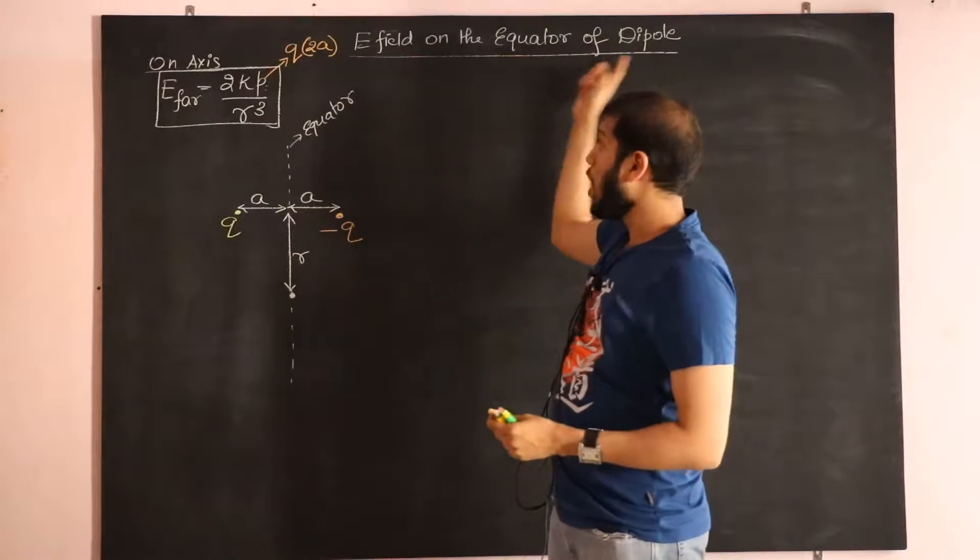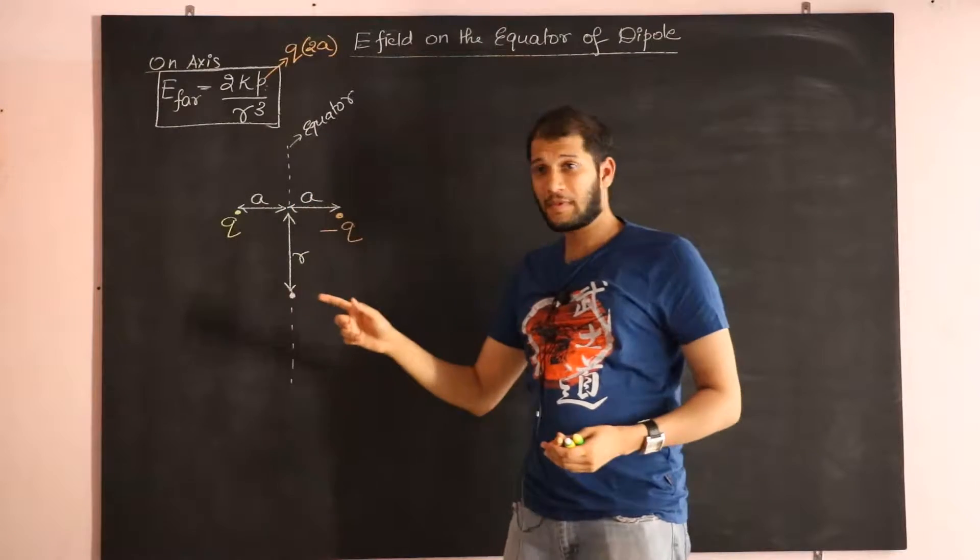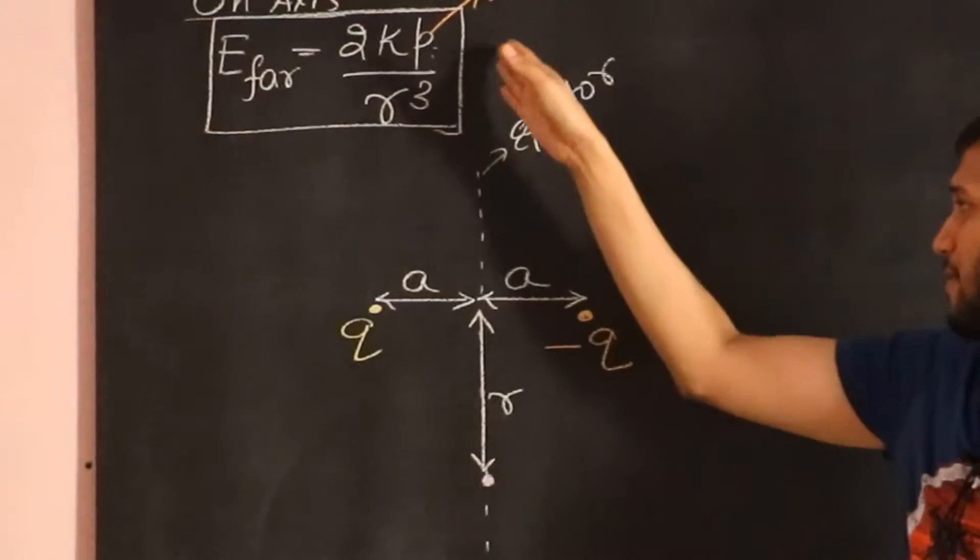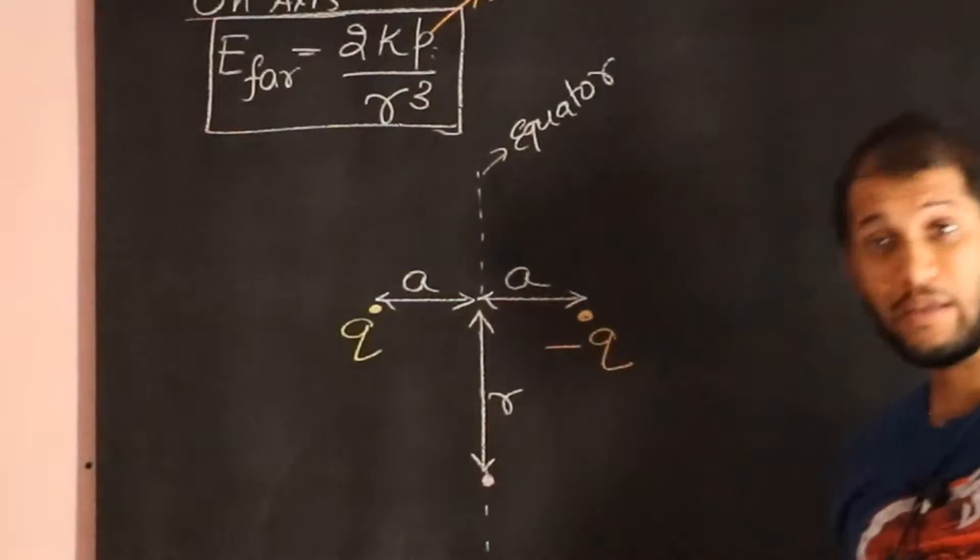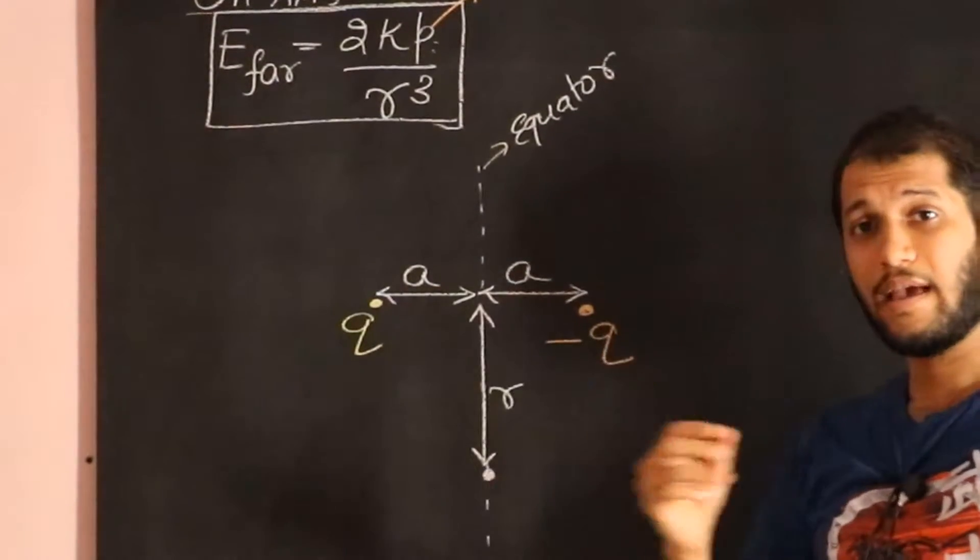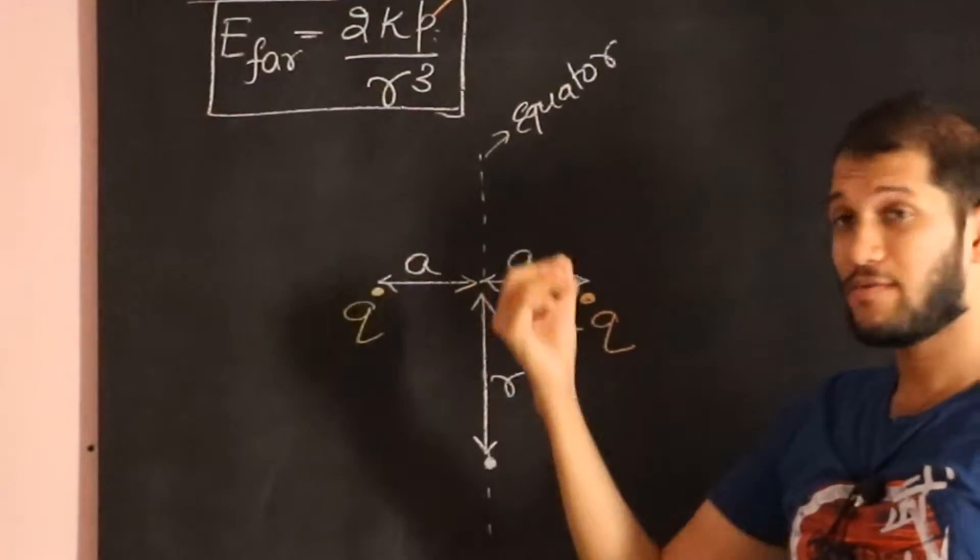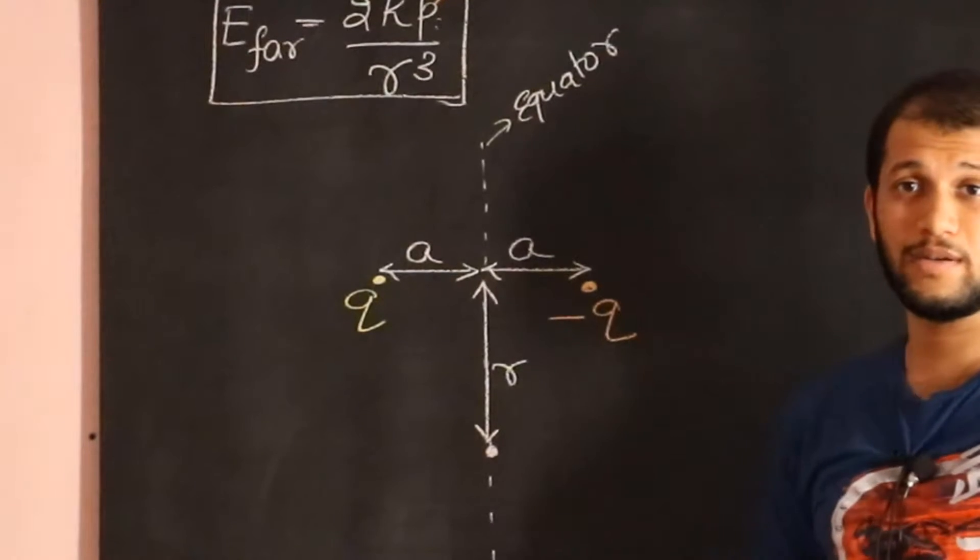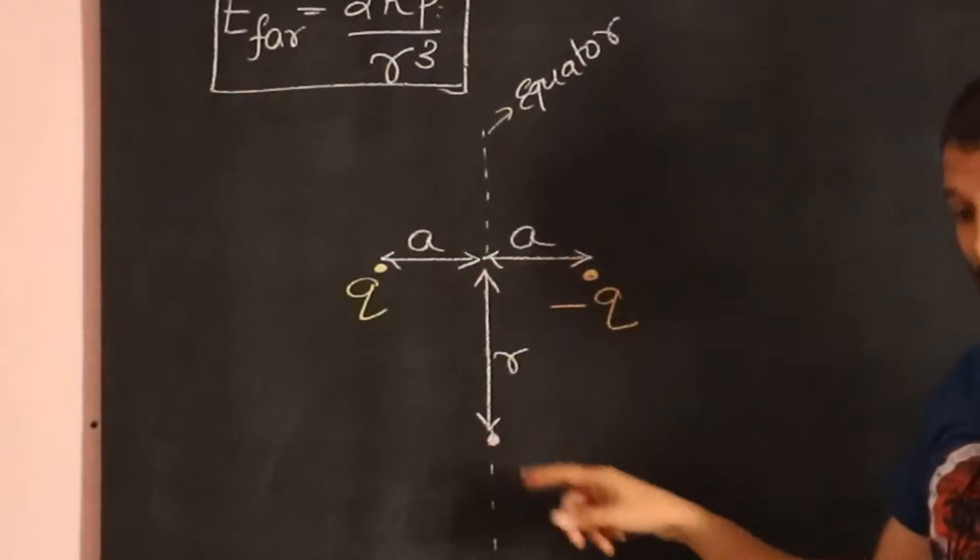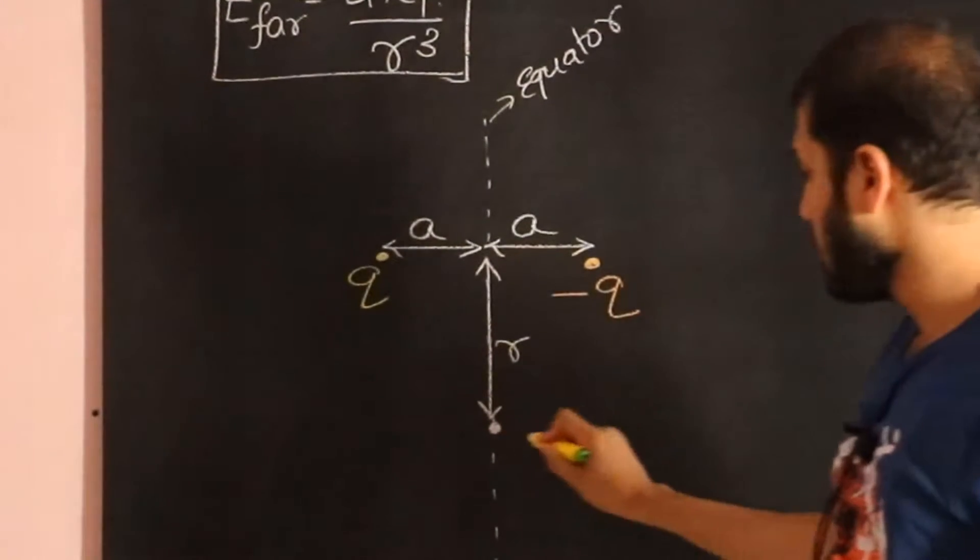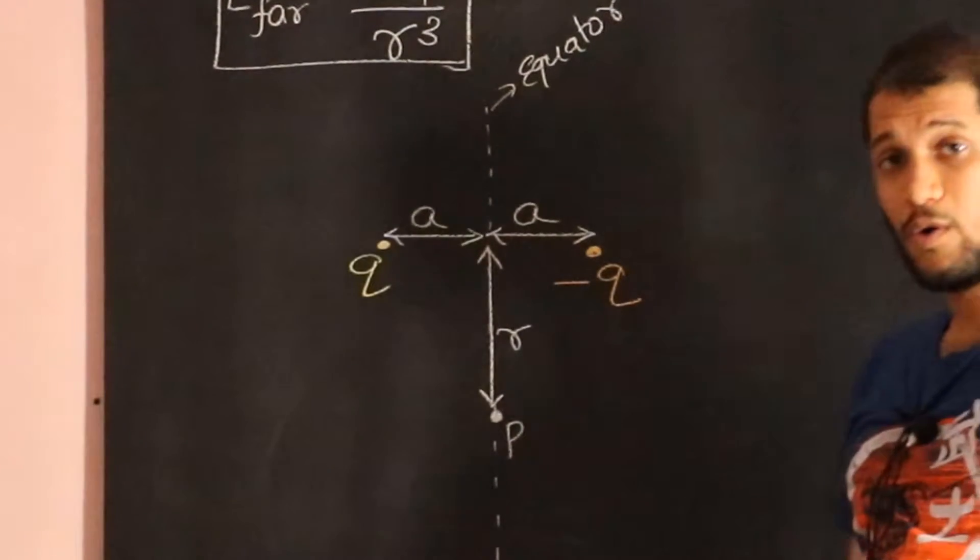This is the axis, and if you draw a line perpendicular to the axis and make sure that line passes through the center of the dipole, we will call that the equator. So here we have a point P, and our goal now is to calculate the electric field at this point.